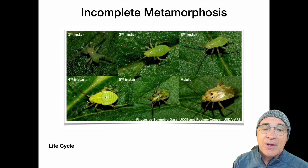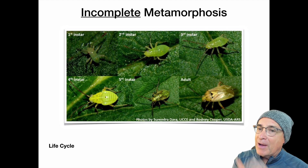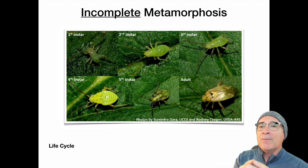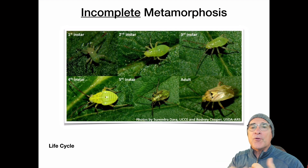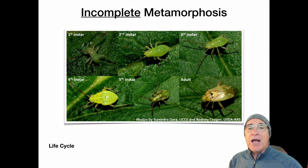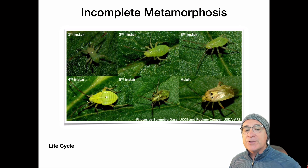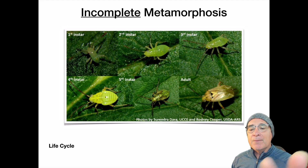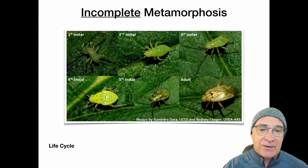Incomplete metamorphosis is quite different. Once these bugs hatch, they're ready to go — they have mouth parts and are very mobile and precocious. Over time they molt, and with each molt they're a little bigger and a little closer to the adult's appearance. These stages are called instars, and they allow the insect to become more and more like the adult.